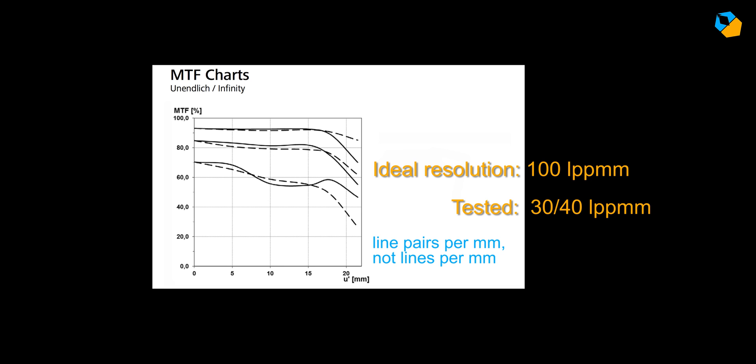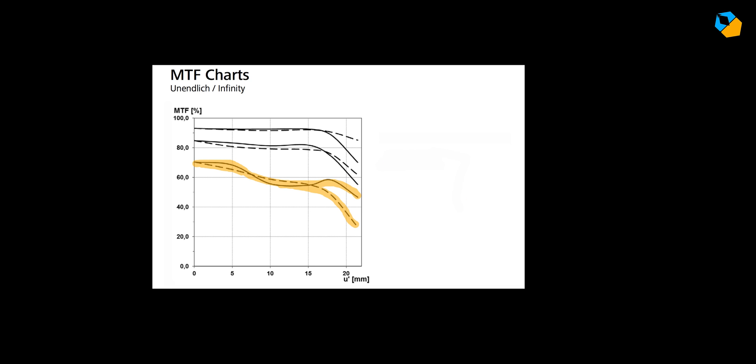Each manufacturer tests for what they think is important. Usually, they top out at 30 or 40 line pairs per millimeter. Each line pair is a line and a blank space. Some manufacturers incorrectly write lines per millimeter, but that's just lazy writing. They point the lens at parallel and perpendicular lines that are 30 or 40 or whatever line pairs per millimeter, and a computer studies how sharp the results are. This line tells us how sharp the lens is, so it's also called the resolution line. The solid line shows how the lenses perform with parallel lines, and the dotted line shows how it performs with perpendicular lines. Notice how they are never the same, though theoretically they should be.